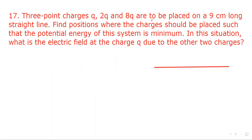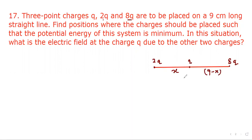Now consider the second question: three point charges q, 2q, and 8q are to be placed on a 9 centimeter long straight line. Find the positions where the charges should be placed such that the potential energy of the system is minimum. To minimize the potential energy, the bigger charges must be placed far apart, so we place 2q and 8q at the ends, with the small charge q in between at distance x, making the other distance 9 minus x centimeters.